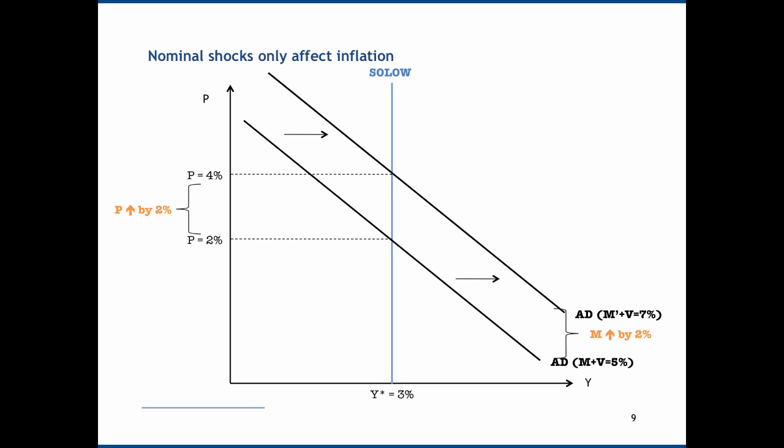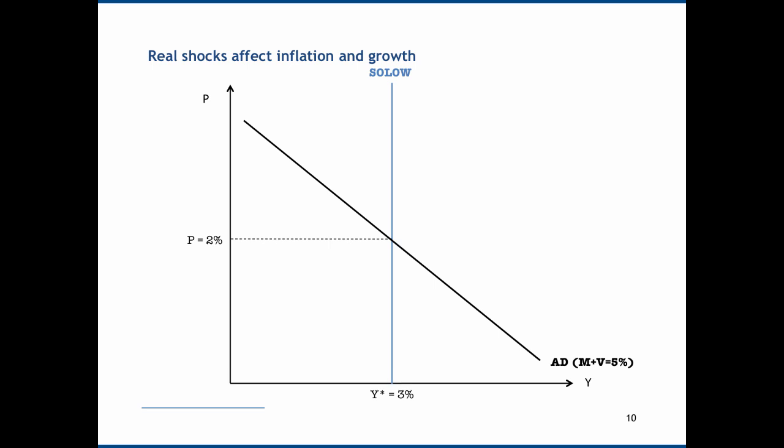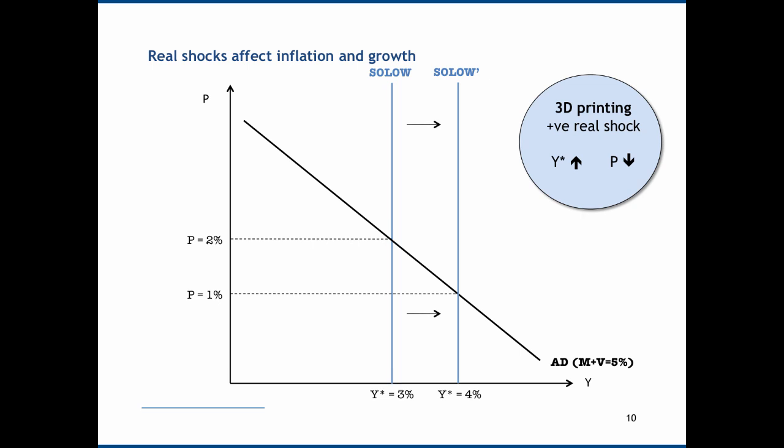We can also use the Solo curve and aggregate demand curve to think about how productivity shocks affect the economy. Let's imagine the advent of 3D printing, which constitutes a positive real shock. This is going to shift the Solo curve to the right — let's imagine it shifts such that Y star is now equal to 4%. We will move down the aggregate demand curve and the inflation rate will fall to 1%. To summarise: 3D printing, a positive real shock, leads to an increase in Y star and a decrease in inflation.